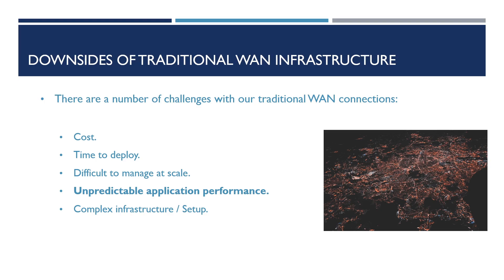An example of this is our connection from a branch location to a service located on the internet, take for example Salesforce. The application may be working absolutely fine at one of our locations, however we may be experiencing poor latency or jitter on the circuit, which in turn is causing our VoIP calls to be degraded but unnoticeable when using web applications. In our current wide area network setup, we'd need to monitor our circuits and application performance in order to determine if there are any issues affecting users, or wait for them to report it. From here we'd then need to potentially manually failover traffic to another circuit at the location, if they have one.